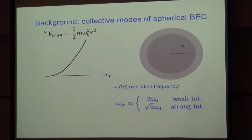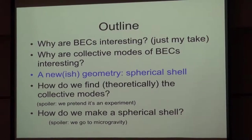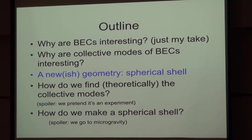Those are classic collective mode experiments for the simplest BEC — the first BEC, just in a harmonic trap, a solid sphere. I want to talk to you about a somewhat new geometry. It's new in the sense that the theory for the kind of trap and some of the early experiments were done in the last ten years, but we're still trying to achieve the full geometry I'm going to tell you about.